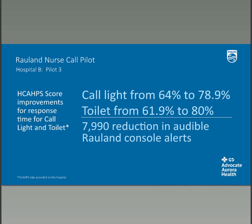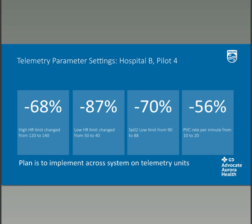Tied to the telemetry performance improvement project, we piloted new default settings for telemetry patients. We changed the high heart rate default from 120 to 140, the low heart rate from 50 to 40, SpO2 down to 88%, and the PVC rate from 10 to 20. Results showed reductions ranging from 56% to 87%. Good results across all the changes.